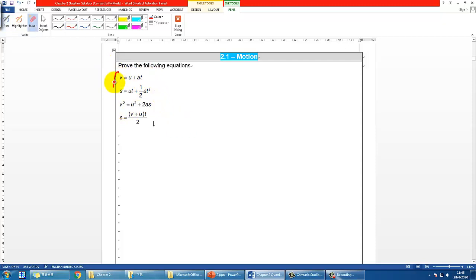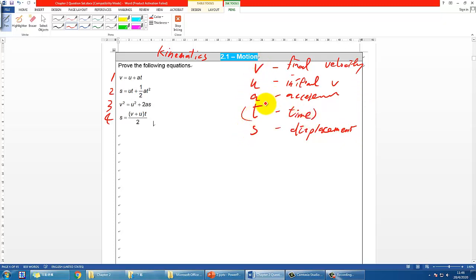Here are four equations I will call simply 1, 2, 3, 4. These equations are called kinematics equations because they involve motion. Before you start to prove them, let me define the variables: V represents final velocity, U is initial velocity, A is acceleration, T is time, and S is displacement. Be careful, it's displacement not distance. Basically, except time, all other four are vectors.